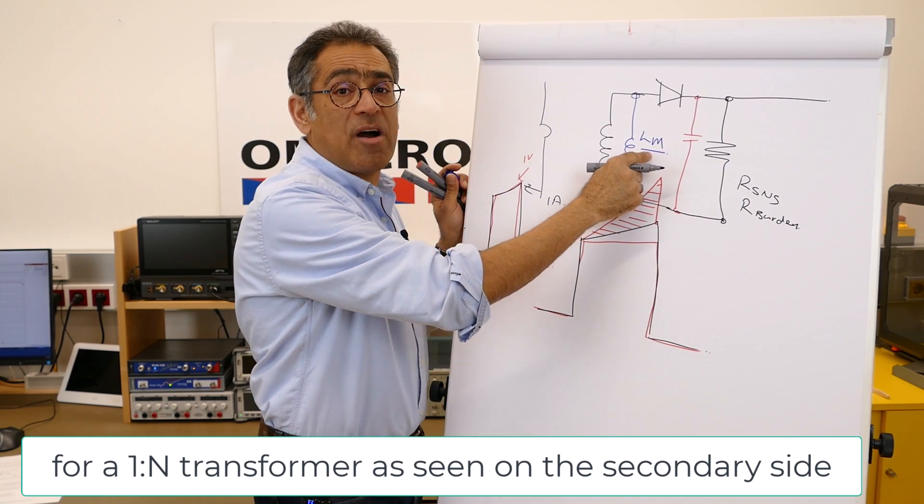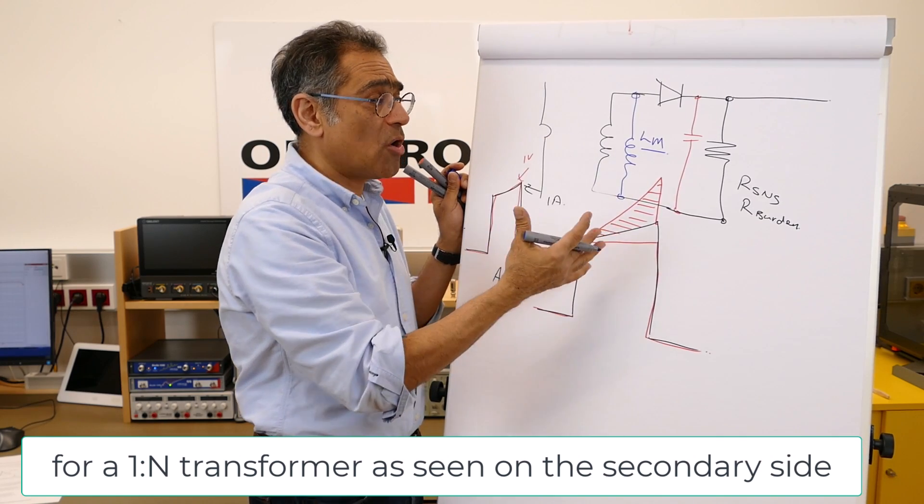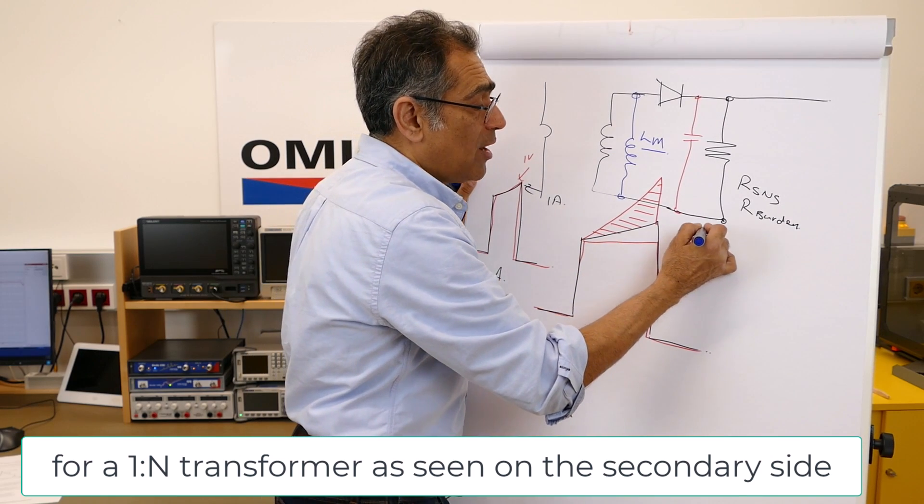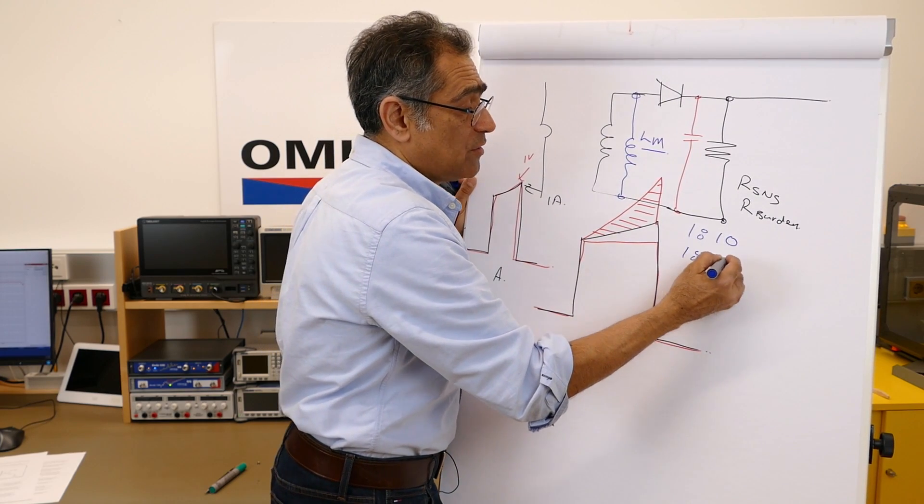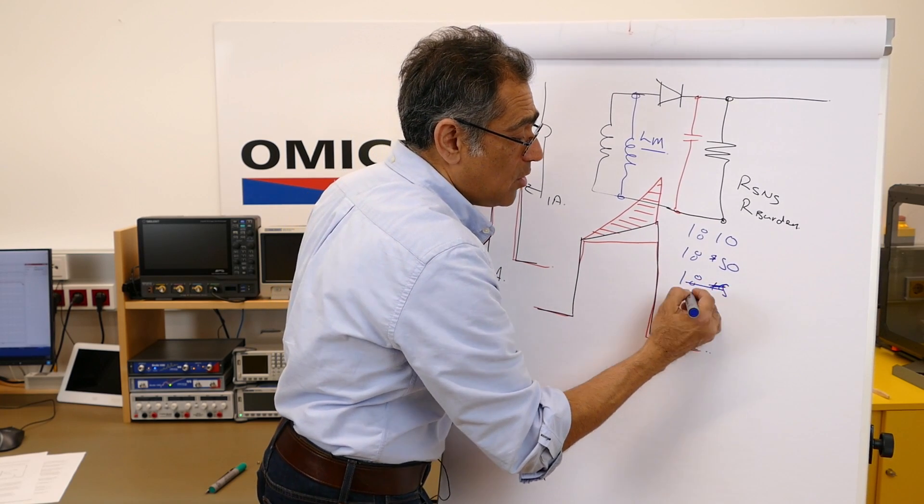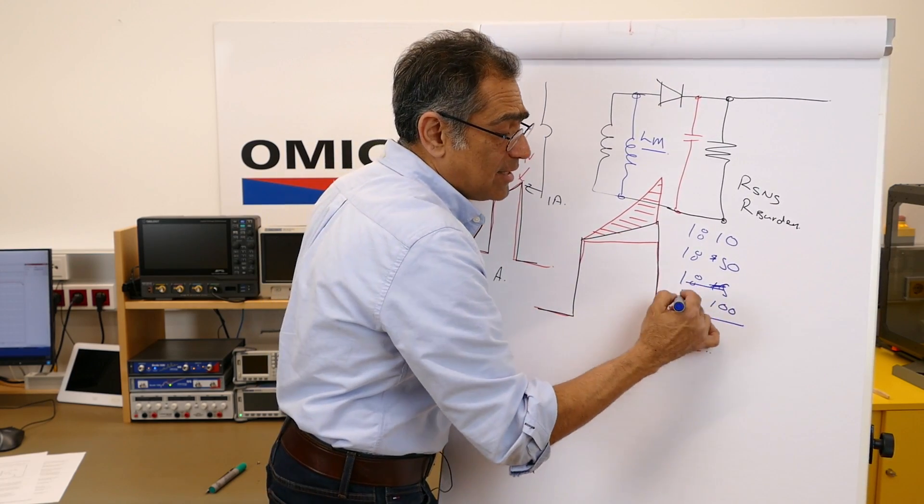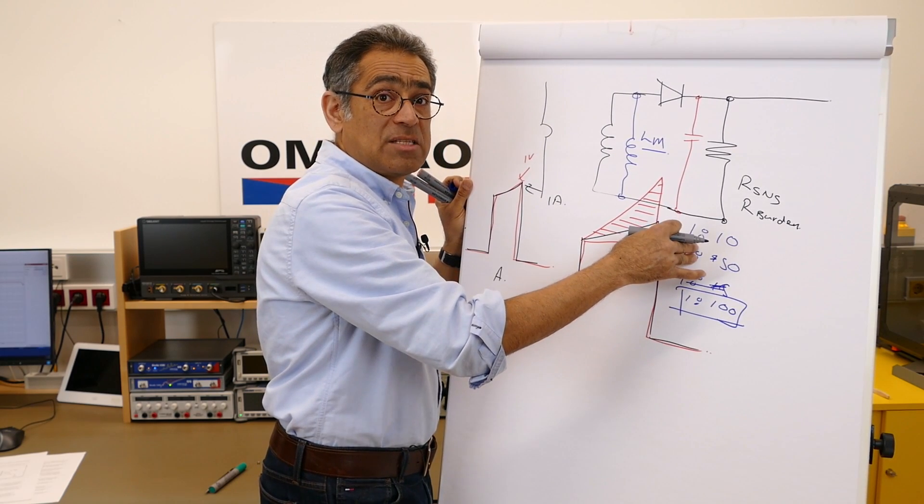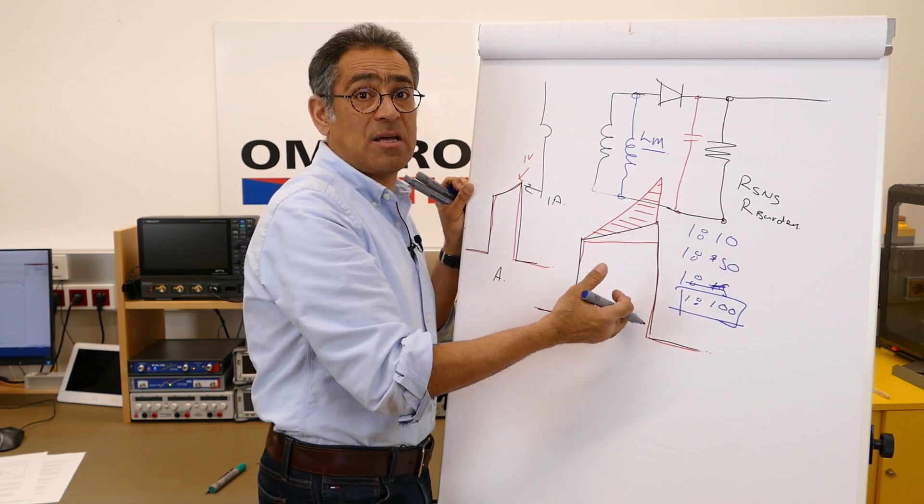This is defined in the datasheet of the transformer by the manufacturer. We also know that the inductance is proportional to the square of the turns ratio. So if you have got a 1 to 10 turns ratio transformer, a 1 to 50 turns ratio transformer, and 1 to 100 turns ratio, the magnetizing inductance of this one is going to be much, much, much higher than these two. And the higher the magnetizing inductance, then the lower the magnetizing current.